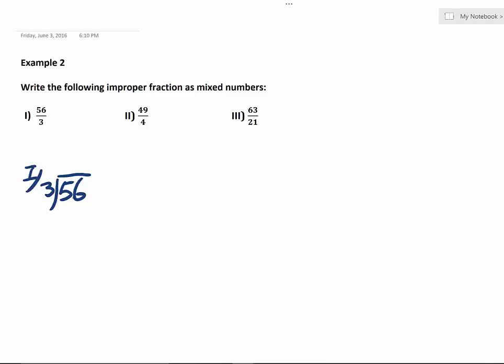So 3 goes into 5, which is 1 times 3, is going to be 3. Subtract it, you get 2, bring down the 6, we have 26, and 3 going into 26 will be 8 times. 8 times 3 is 24, so we have a remainder of 2.